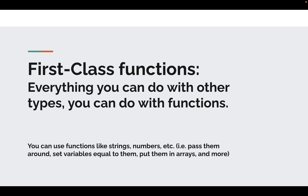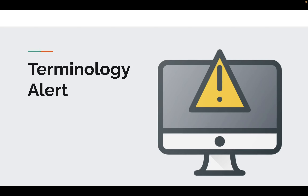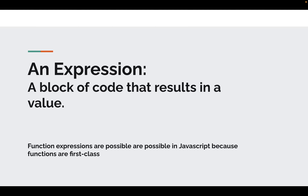In JavaScript, functions are first class. You can use them just like you use any other type — you can even assign them to variables and put them in arrays. This makes for some powerful patterns and also allows us to write function expressions. An expression is just a block of code that results in a value, like setting a variable equal to a value.